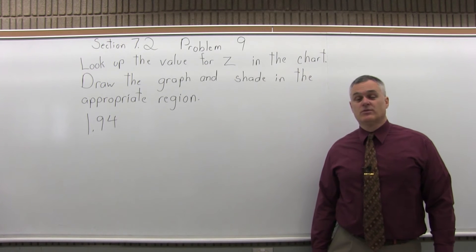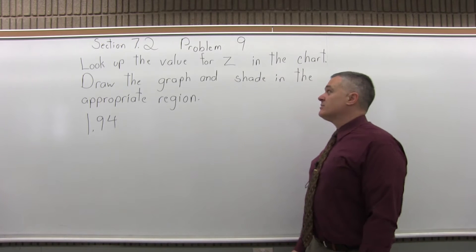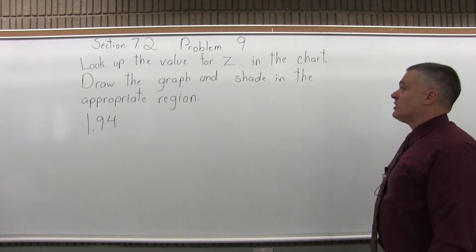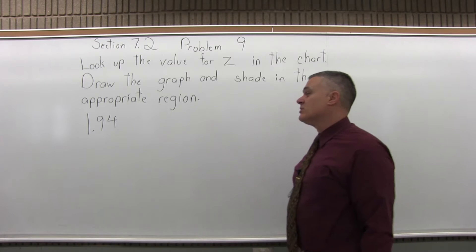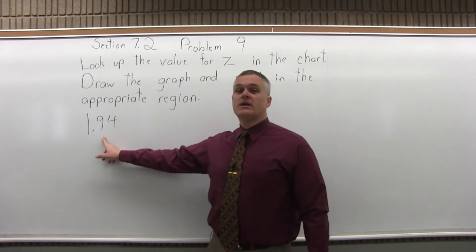This is Section 7.2, Problem 9. It says look up the value for z in the chart, draw the graph and shade in the appropriate region. So the number to look up is 1.94.